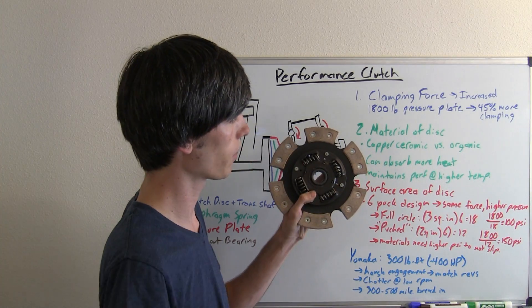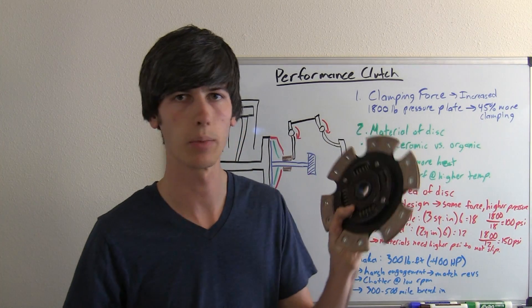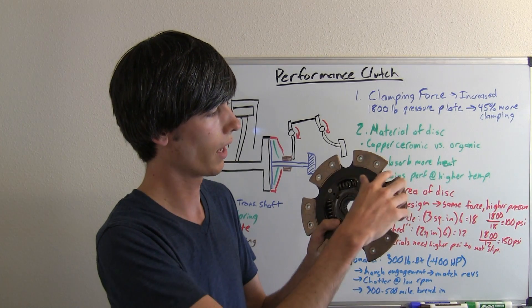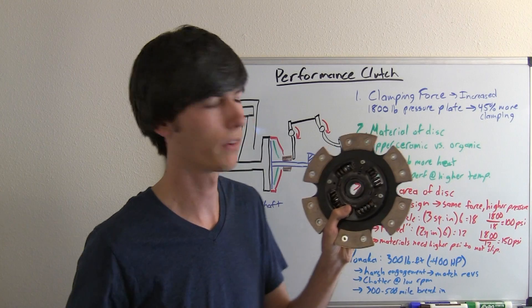1800 pound force divided by the 12 square inches and that gives us 150 psi. So simply by taking out these little sections, we've increased the pressure on each one of these pucks by 50%.